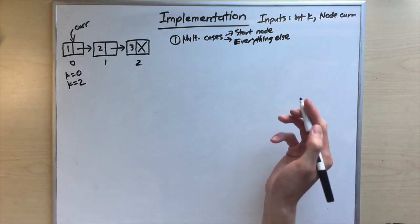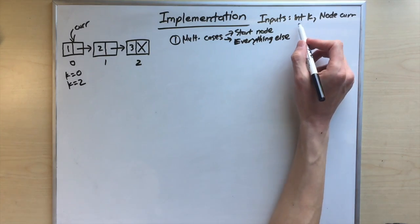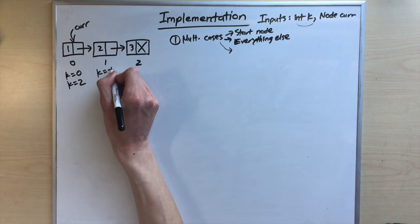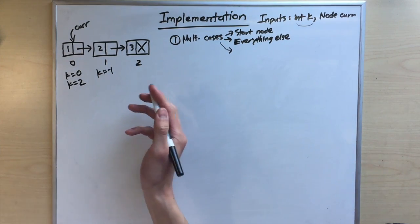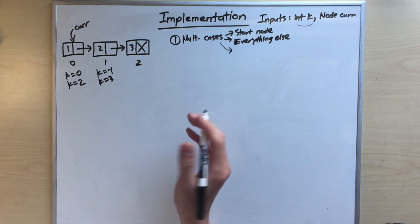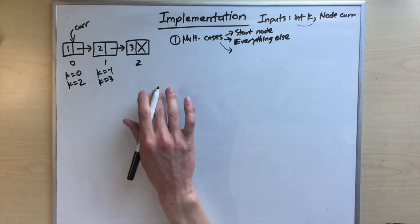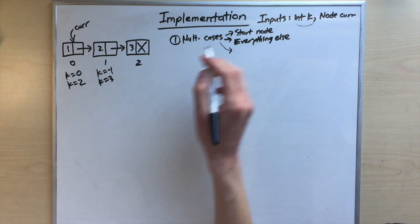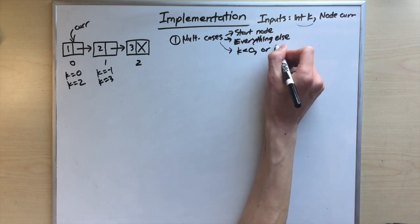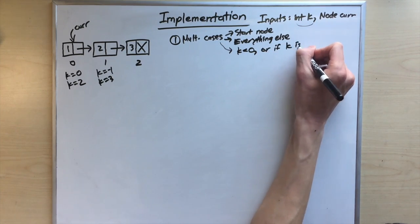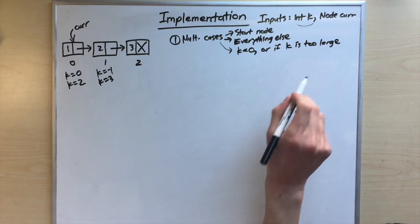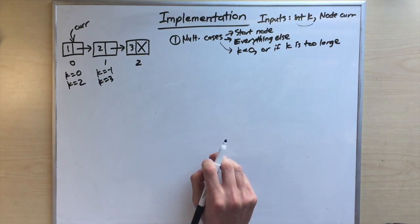We also have to handle invalid k values. For example, k equals negative one is not valid since indices start at zero. k equals three is also invalid since our indices only go up to two. If k is less than zero or too large, we make no changes to our linked list.